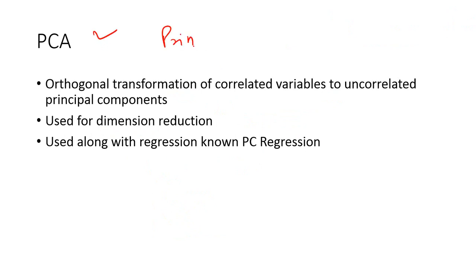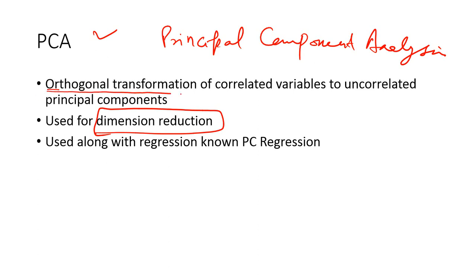The next one is the PCA or principal component analysis. PCA is used for a number of purposes. It's primarily used for dimension reduction where you want to get down to a few number of variables from a large set of variables. What it does is it takes the orthogonal transformation of correlated variables to convert a number of correlated variables to a small number of uncorrelated principal components.